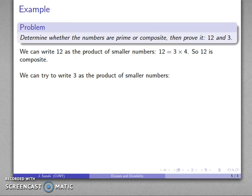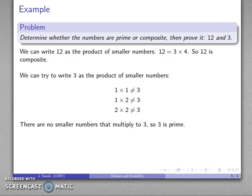How about 3? Well, we can try the same thing. We can try to write 3 as the product of smaller numbers. And well, there's only a few smaller numbers than 3. So 1 times 1, nope. 1 times 2, nope. 2 times 2, nope. And these are the only possible products of smaller numbers. Any other product will require larger numbers. So we have a product 2 times 3, 3 times 5. But then 3 is not smaller than 3. No product of smaller numbers will give us 3. And so that tells us that 3 is a prime number. Notice one important thing. It's really easy to prove a number is composite. It's really hard to prove a number is prime.